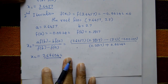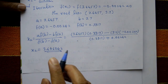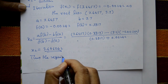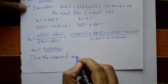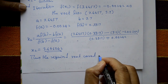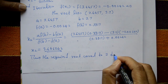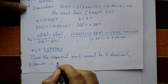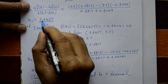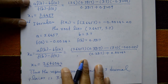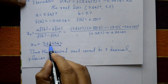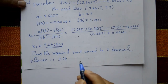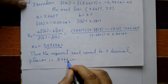Comparing x1 = 3.6457 and x2 = 3.6460, considering three decimal places: both round to 3.646. Since the digit after the third decimal place is 0, which is less than 5, the required root correct to three decimal places is 3.646.